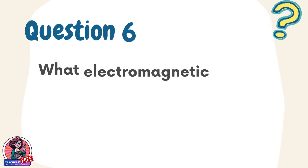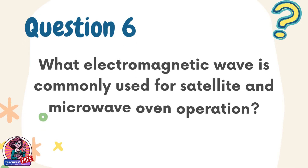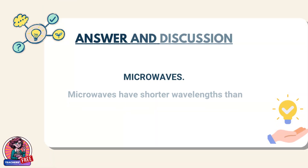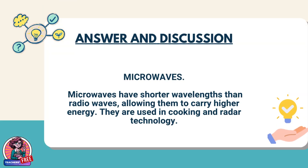Question 6. What electromagnetic wave is commonly used for satellite and microwave oven operation? Answer: microwaves. Microwaves have shorter wavelengths than radio waves, allowing them to carry higher energy. They are used in cooking and radar technology.